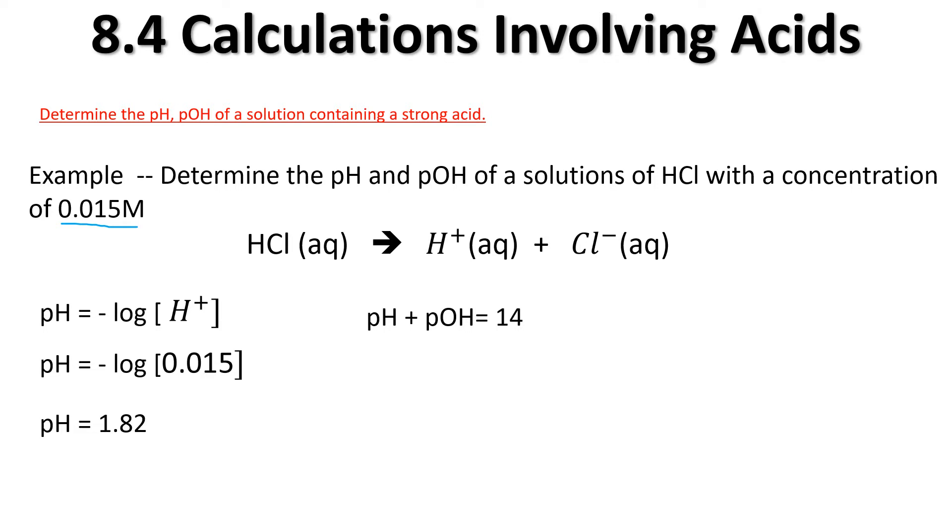You've probably learned in previous years that pH and pOH add up to 14. So rearranging your equation to find the pOH, we're simply taking 14 and subtracting 1.82. There's the actual final answer, 12.18.